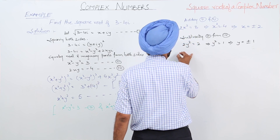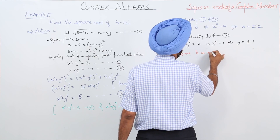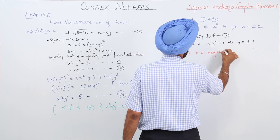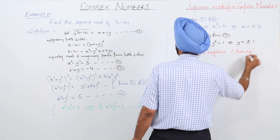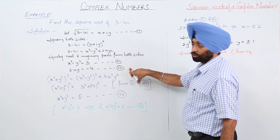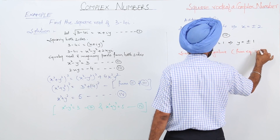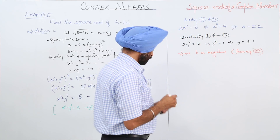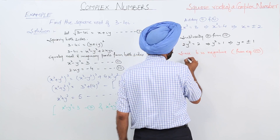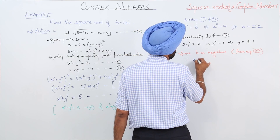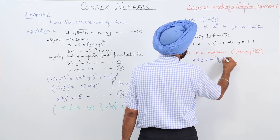Since the product 2xy is negative from equation 3, x and y must be of opposite signs.